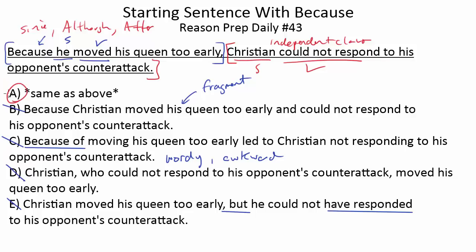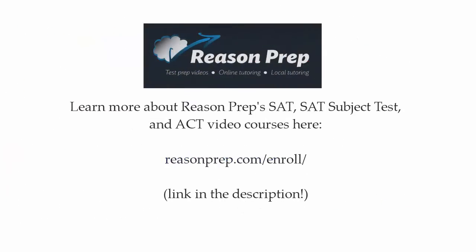A is the answer. For the purposes of this test, do not immediately get rid of a choice if it starts with because. In fact, it's probably going to be right — one of the choices starting with because will likely end up being correct, because most students think you can't start a sentence with because. So you can psych out the College Board a little bit there. But don't immediately get rid of it. Make sure you've got a complete sentence with no fragment, and as long as it makes sense logically, it's probably going to be your answer. To learn more about Reason Prep's SAT, SAT Subject Test, and ACT video courses, go to reasonprep.com/enroll — the link is in the description below the video.